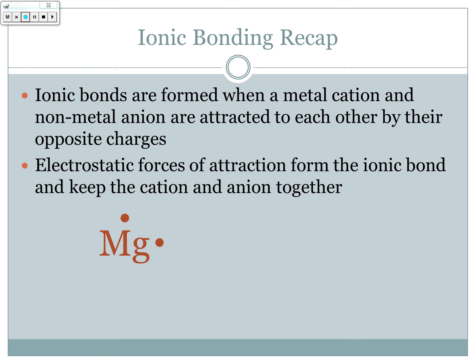So for example, if we have magnesium and we have chlorine — magnesium has two valence electrons, chlorine has seven. In order to achieve the full valence shell, magnesium would need to lose two and chlorine needs to gain one. So magnesium could donate two electrons, but chlorine can only accept one, so there need to be two chlorine atoms so that there are two locations for the magnesium valence electrons to go.